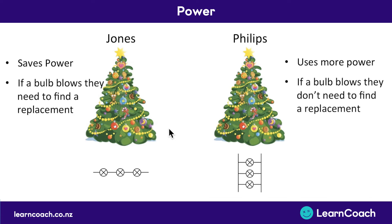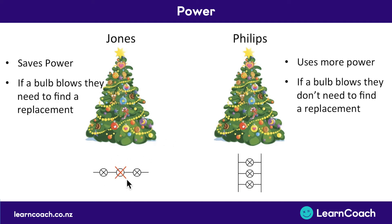However, if a bulb blows with the Joneses Christmas tree, they're in trouble. If you take out one of these bulbs, the whole circuit is broken and none of the Christmas tree lights will work. They would actually have to physically go through every single light in their Christmas tree, find out which bulb was blown, and replace that exact one before they could work, because you've just broken the circuit. So that's a little bit problematic when you're talking about series circuits with lots of bulbs.